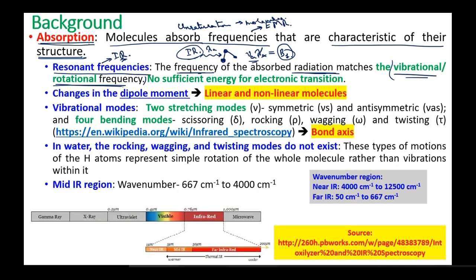Due to this reason — if you remember your LCR circuit characteristics — for each LCR circuit there is a resonant frequency at which there is either an increase or decrease in power. Similarly, here also, at a particular frequency we are able to excite bond vibration or bond rotation, and when that frequency matches, there is absorption. We call these specific frequencies resonant frequencies. As already mentioned, IR radiations do not have sufficient energy for inducing electronic transitions.